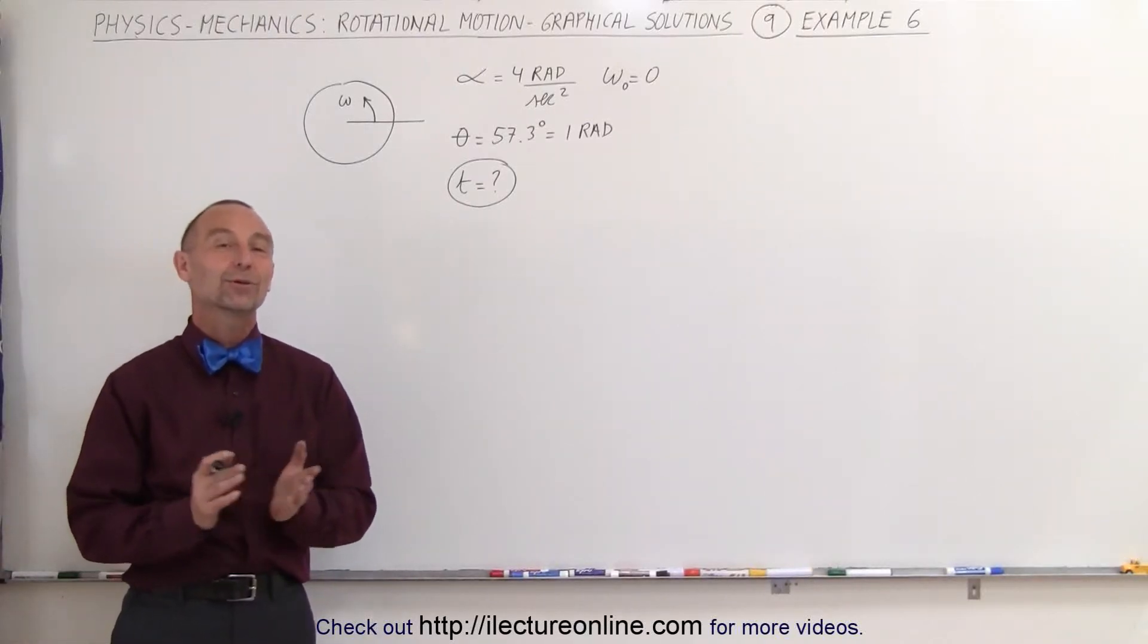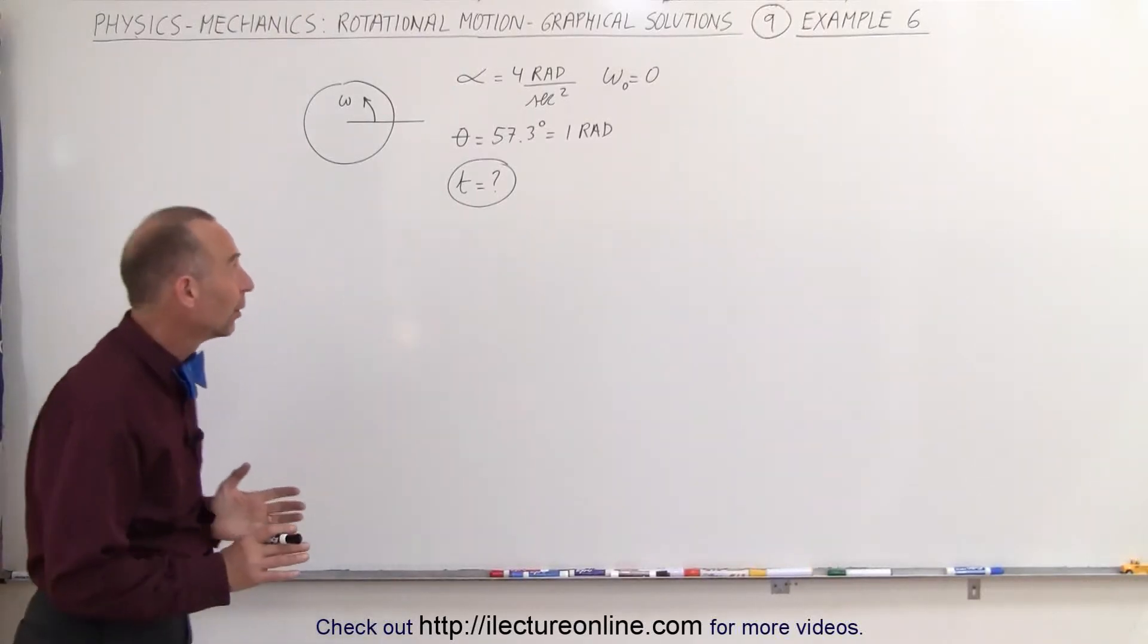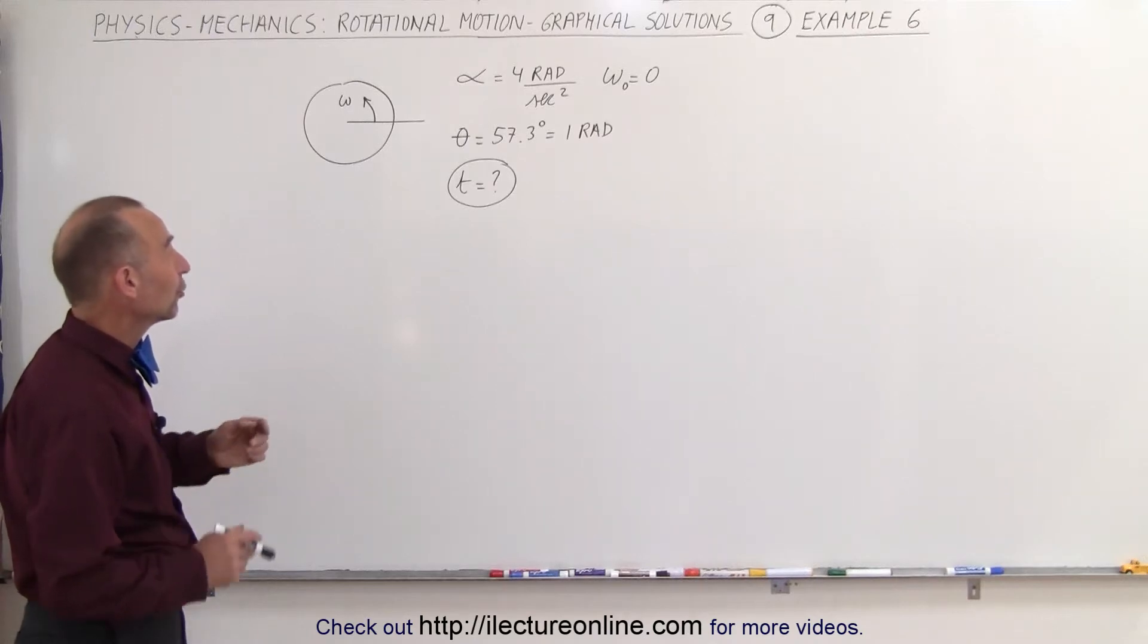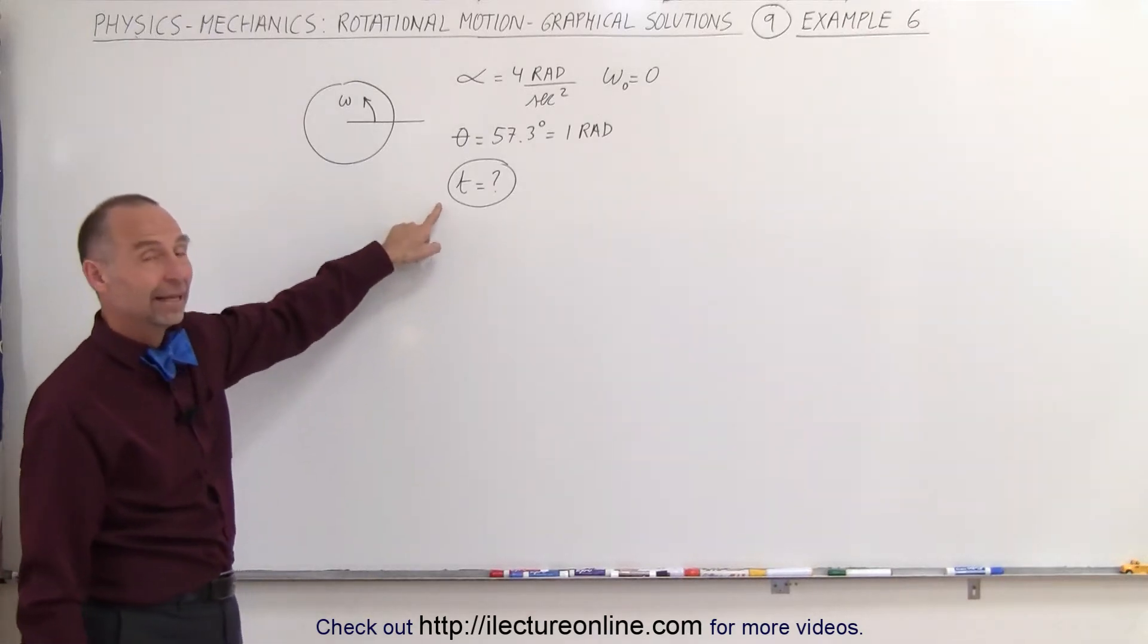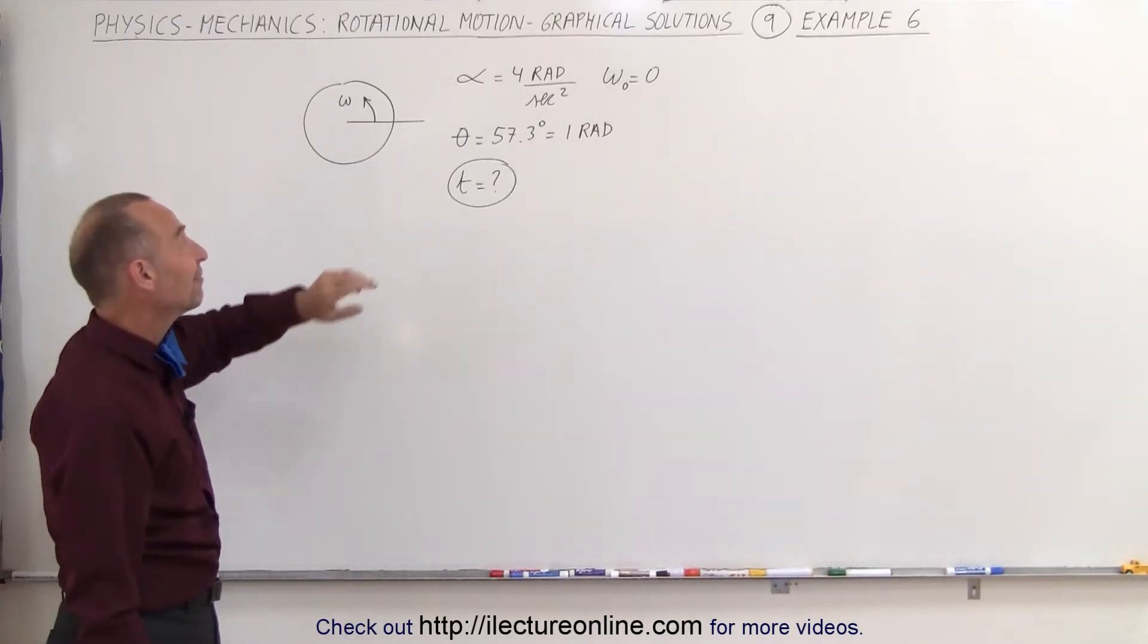Welcome to ElectronLine. Here we're going to do a very interesting problem, one that has actually two unknowns. Even though we're just looking for the time, it also did not give us the final omega.